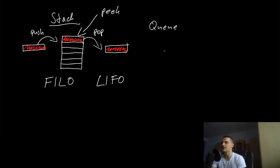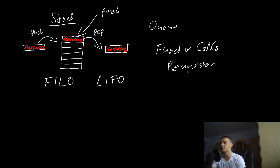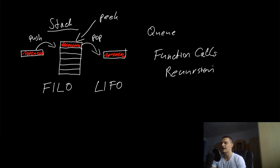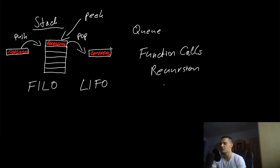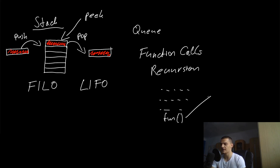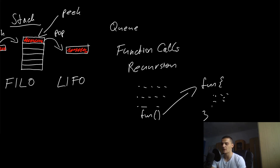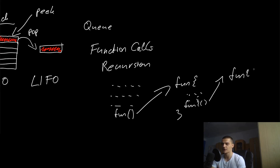When is this useful? A main use case is function calls and recursion, though these aren't the only use cases. On a low level, when we call a function, we need to save where to return once the function is finished. You have some lines of code, then a function call, and inside that function you might call another function, which itself may call yet another function.